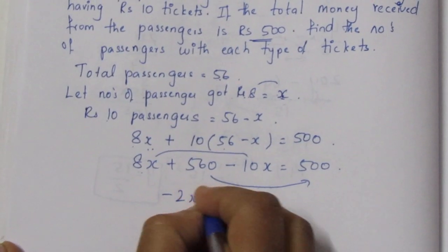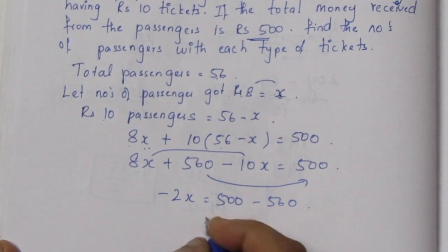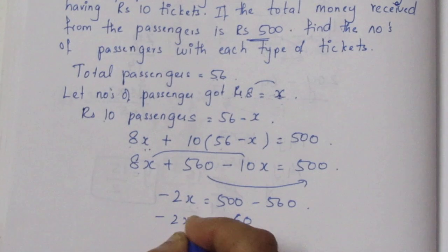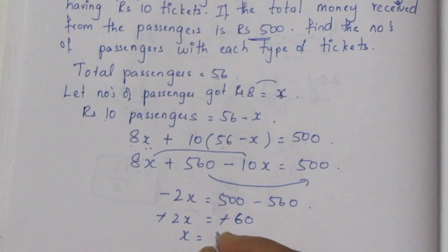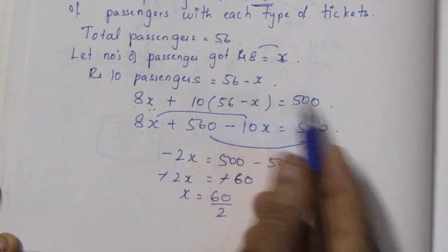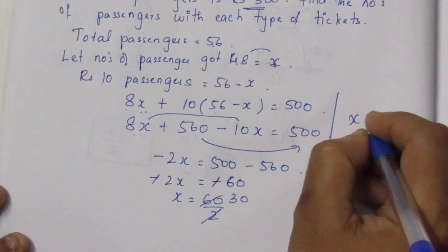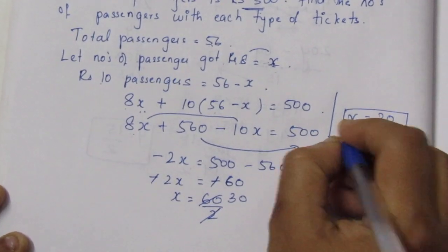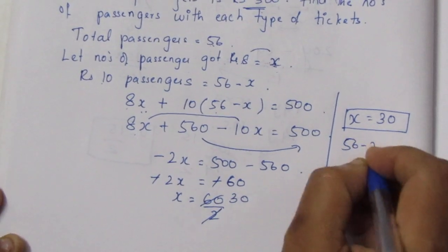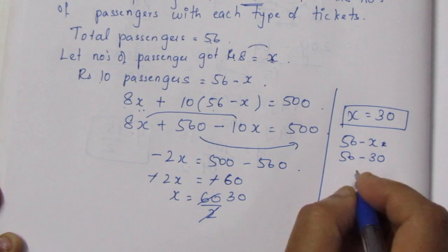Solving: 8x minus 10x gives minus 2x, equal to 500 minus 560, which is minus 60. Dividing both sides by minus 2, x is equal to 30. So x equals 30. Next, 56 minus x gives 56 minus 30, which is 26.